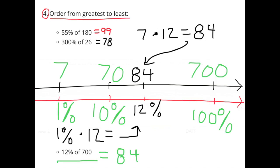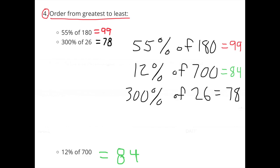For 12% of 700, I divided 700 by 100 to get 7 for 1%, then multiplied 7 times 12 to get 84. So 12% of 700 is 84. In order from greatest to least: 55% of 180 equals 99, 12% of 700 equals 84, and 300% of 26 equals 78.